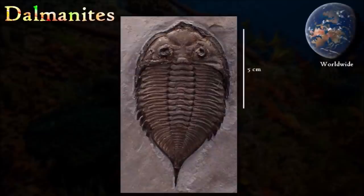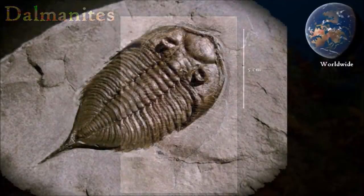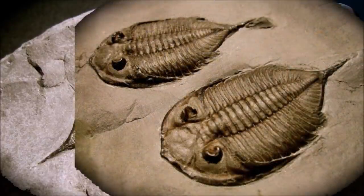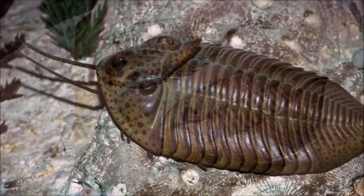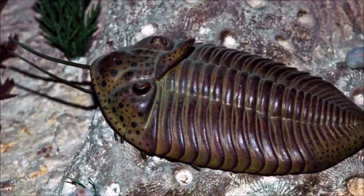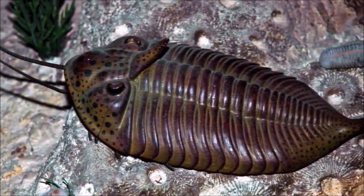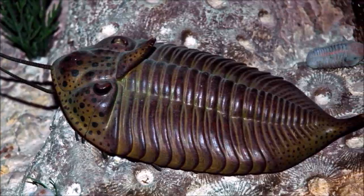The trilobite Dalmanites had a large head shield with a prominent, forward-widening glabella in the center, featuring two pairs of narrow furrows as well as deep oblique ones. Its eyes were large, set at the back of the head, and had prominent lenses. Its cheeks were gently convex and extended into robust, broad-based spines. Under the head shield, attached beneath the glabella, was a large hypostome — a calcified structure thought to have enclosed the stomach. The thorax was segmented and the broadly triangular tail shield ended in a spine.